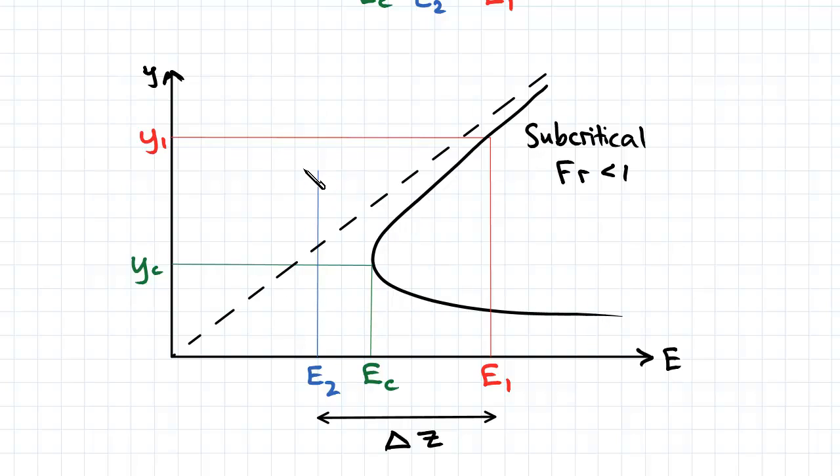What happens here is that the flow adjusts so that it fits on the specific energy curve while maintaining a difference of delta z between e1 and e2. So essentially all you'll have to do is shift e2 and e1 by the same amount until e2 lies on the critical point.